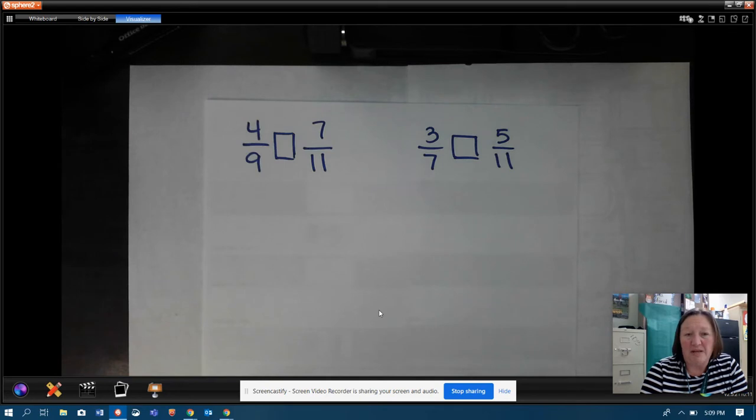So we have another way that we could look at it. I have four ninths and I need to compare that to seven elevenths, and I've already decided that I'm not very good at breaking things up into nine equal parts and eleven equal parts. So instead, I want to convert those numbers into decimals.